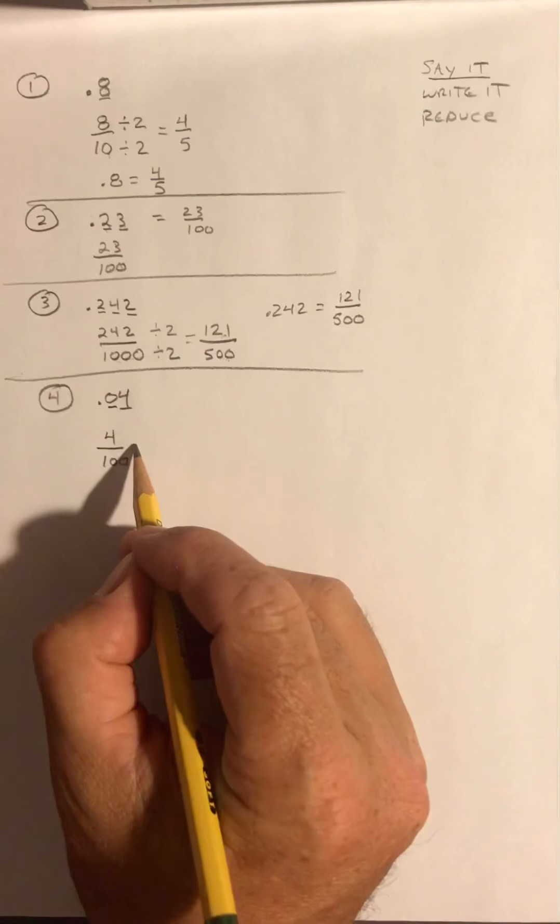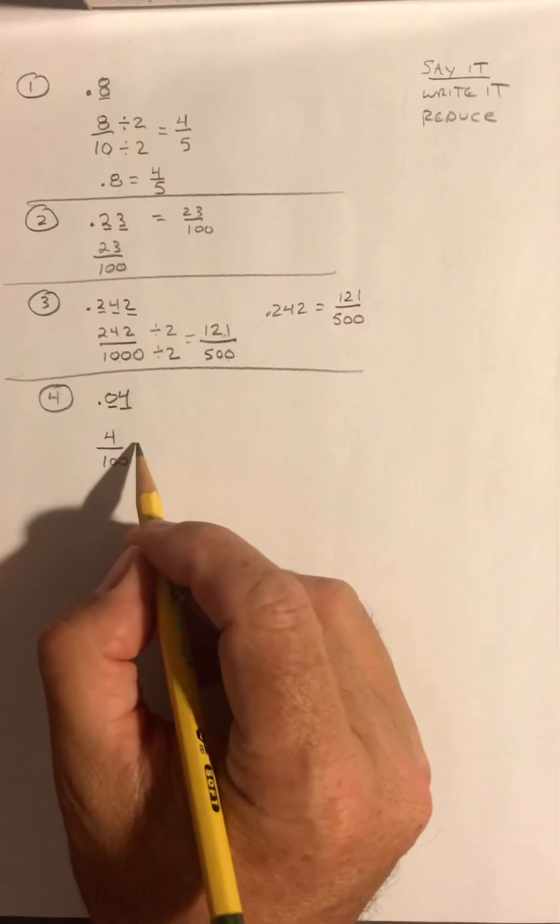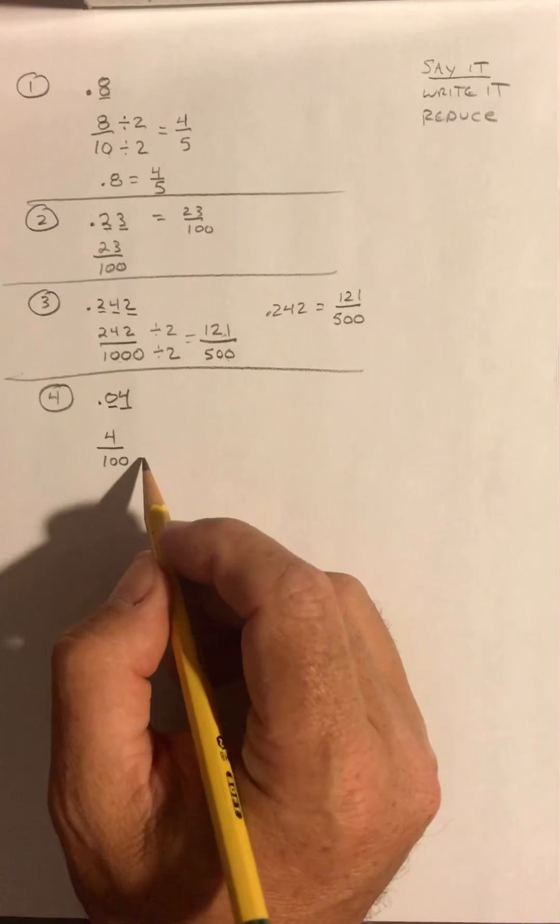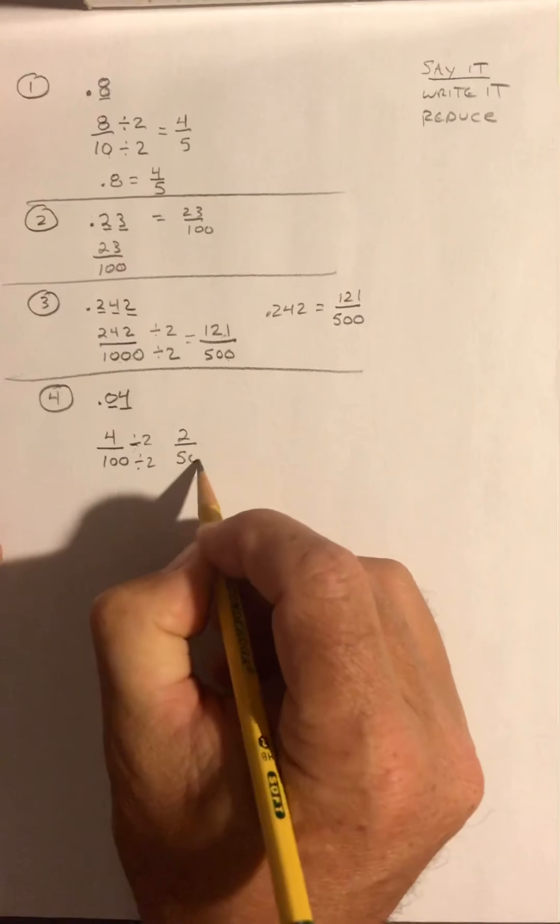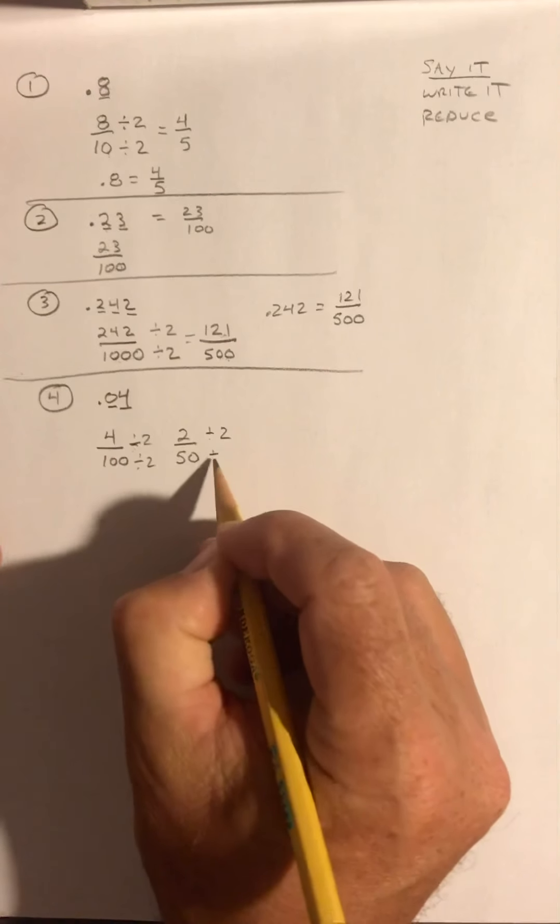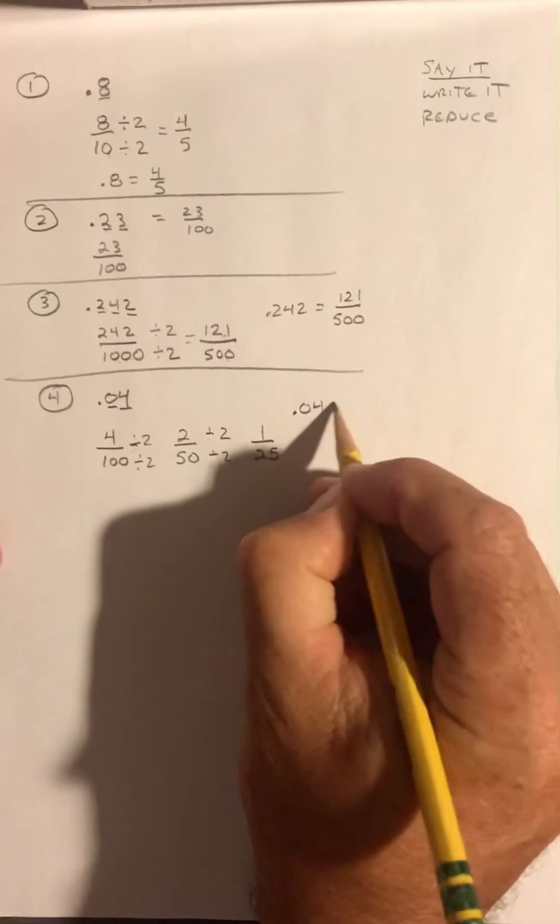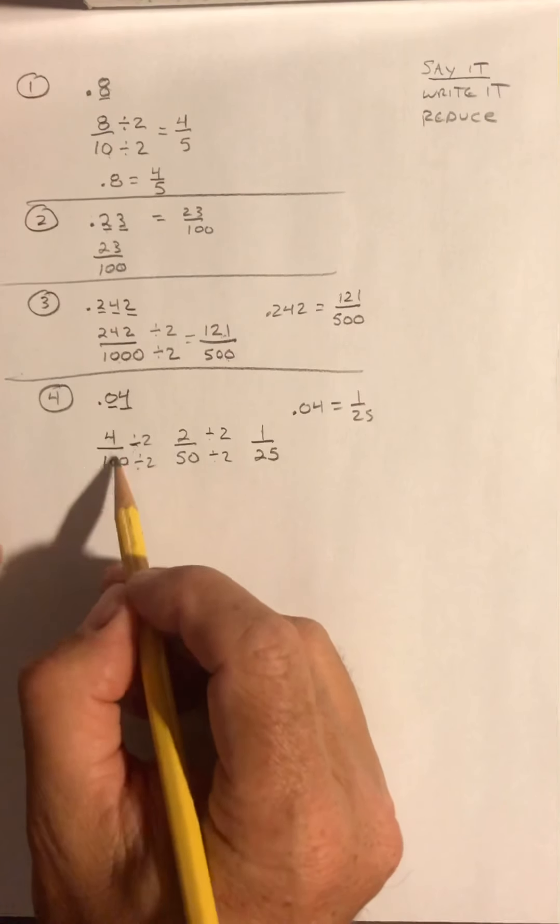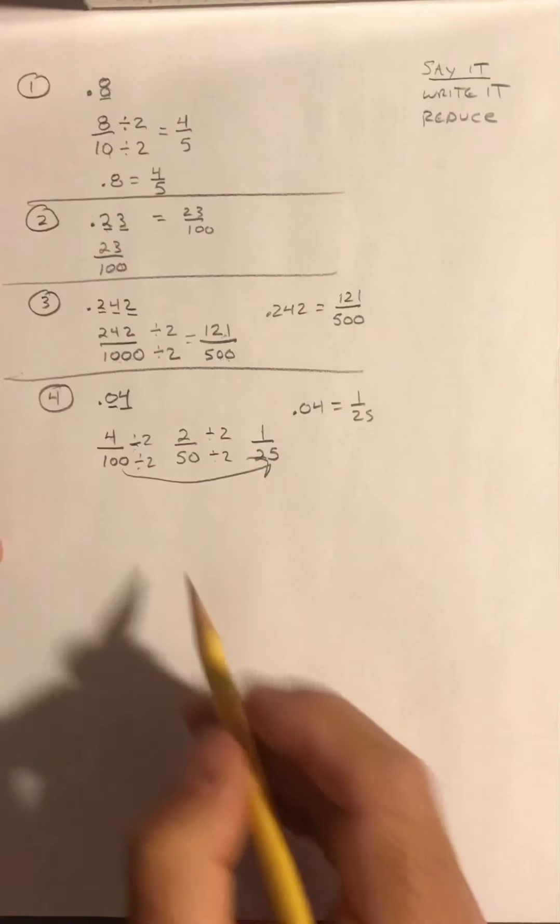Now I'm going to reduce this. I said it 4 hundredths, I wrote it 4 hundredths, and now I'm going to reduce it. What number goes into 4 and 100? I could divide both by 2. I'm going to divide both by 2, and I'll get 2 over 50. But they both still have a factor of 2, so I have to do it again. Divide by 2, and this final answer is 1 over 25. So 0.04 equals 1 over 25. Normally I would notice that 4 went into both of these, and I would divide both by 4. It would come to the same answer anyway, but it might be a little quicker.